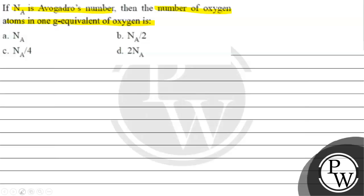Option A: Avogadro's number. Option B: Avogadro's number by 2. Option C: Avogadro's number by 4. Option D: 2 into Avogadro's number.